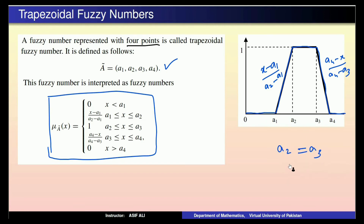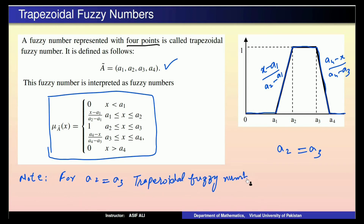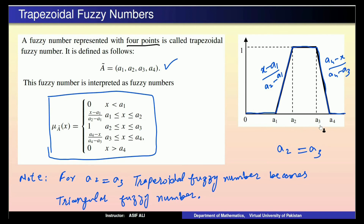اگر ہم a2 کو a3 کے برابر لے دیں تو یہ trapezoidal number، triangular number بن جاتا ہے۔ For a2 = a3, trapezoidal fuzzy numbers become triangular fuzzy numbers۔ جب a2 اور a3 برابر ہوں گے تو flat top ختم ہو جائے گا اور یہ triangular fuzzy number بن جائے گا۔